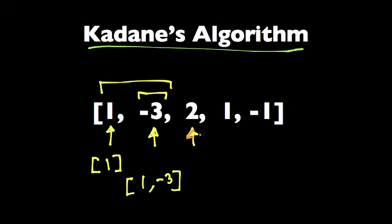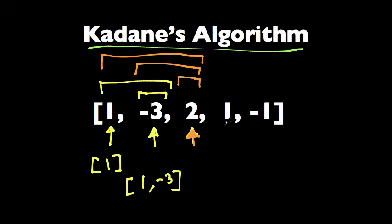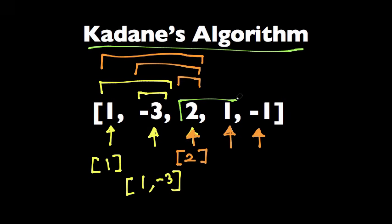For the third index, the maximum subarray ending at this index could be either 2, negative 3, 2, or 1, negative 3, 2. And the maximum one of those is 2 if you compare the sums. We're going to do the same thing for each of the remaining indices. At the end, we're going to compare those subarrays and find the maximum one — in this case, that's 2, 1, with the sum 3.